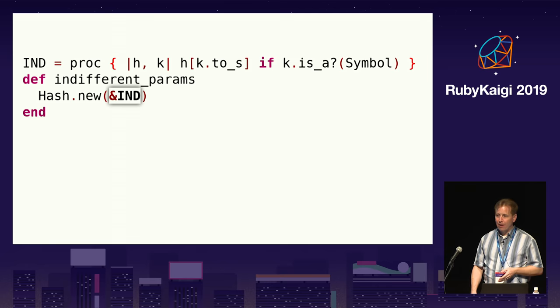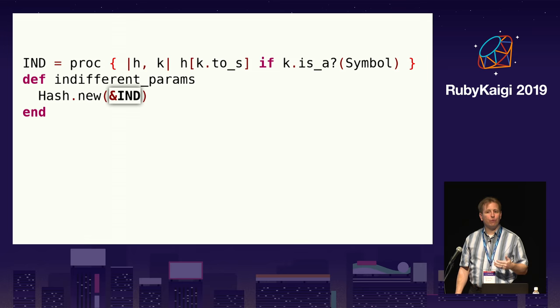Extracting objects to constants, if their values do not depend on runtime state, does not just apply to procs — it applies to most object types. But it is especially beneficial for procs as procs are fairly heavy to allocate. If you're not using the proc as a block and you're just calling it using the call method, you may be able to avoid allocating procs completely.